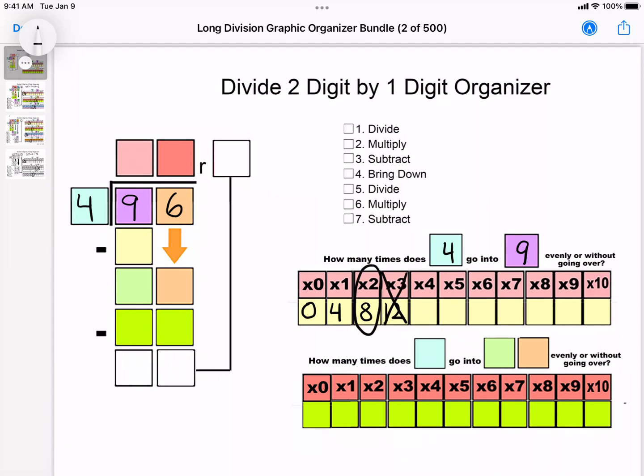Now they follow the colors again. 2 is light pink, 2 goes on top, 8 goes on the bottom. So we divided, multiplied, and now we need to subtract. 9 minus 8 is 1.